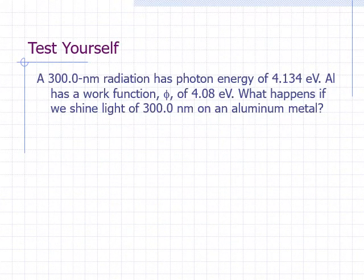A 300 nanometer radiation has a photon energy of 4.134 electron volts. Aluminum has a work function of 4.08 electron volts. What happens if we shine light with a wavelength of 300 nanometers on an aluminum metal? We can see that the photon energy, 4.134 electron volts, is higher than the energy needed to dislodge the electron, which is given as 4.08 electron volts.